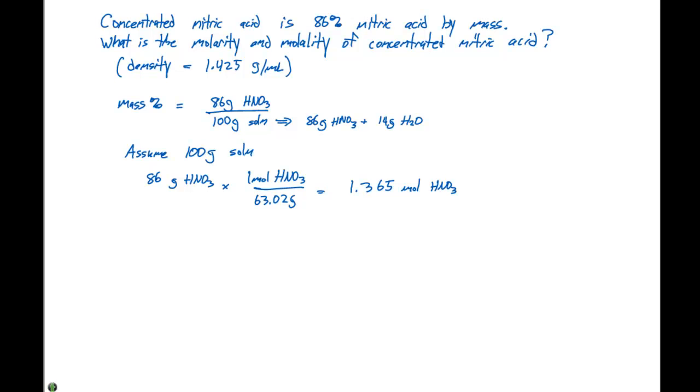If we have a 100 gram solution, we can use the density to figure out what this volume is gonna be. We have 1.425 grams per milliliter. And since molarity is in moles per liter, we need to say that we have 1000 milliliters in one liter. This gives us 0.07042 liters.